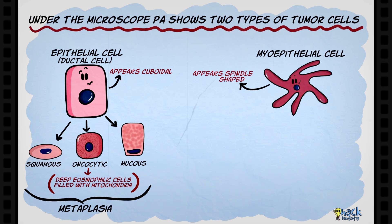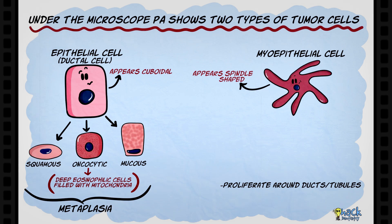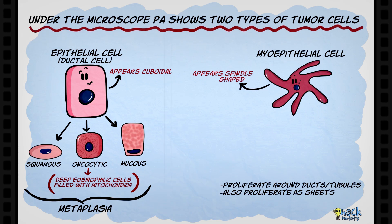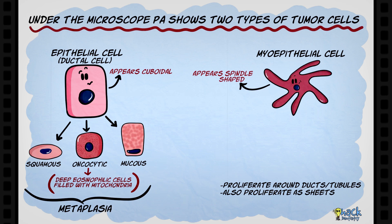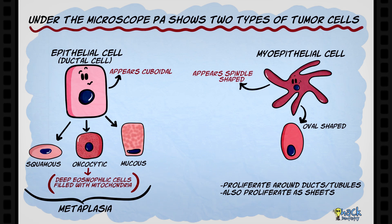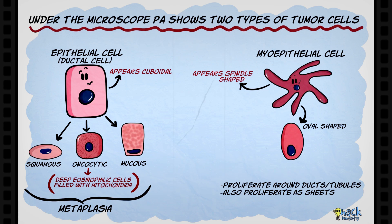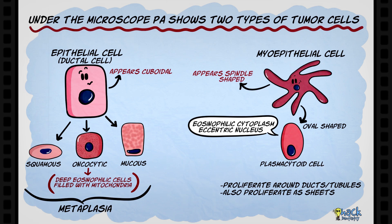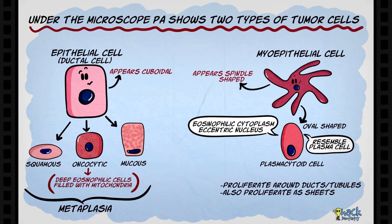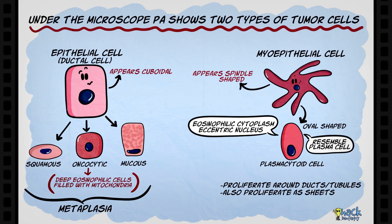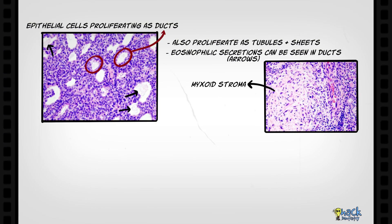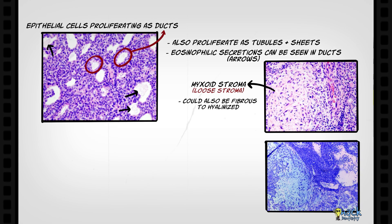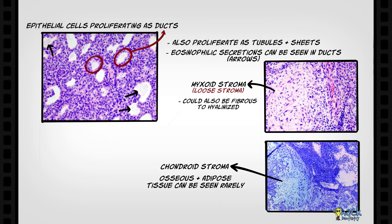Spindle-shaped myoepithelial cells can be seen surrounding the ductal or tubular elements, and they can also be seen proliferating separately as sheets. Myoepithelial cells may lose their spindle shape and become polygonal to oval in shape. These polygonal or oval-shaped myoepithelial cells have an eosinophilic cytoplasm and an eccentrically placed nucleus, and are called plasmacytoid cells — so named because of their resemblance to plasma cells. The stroma of this tumor varies from being myxoid to fibrous and sometimes hyalinized, and various mesenchymal elements like chondroid, osseous, and adipose tissue can also be seen.